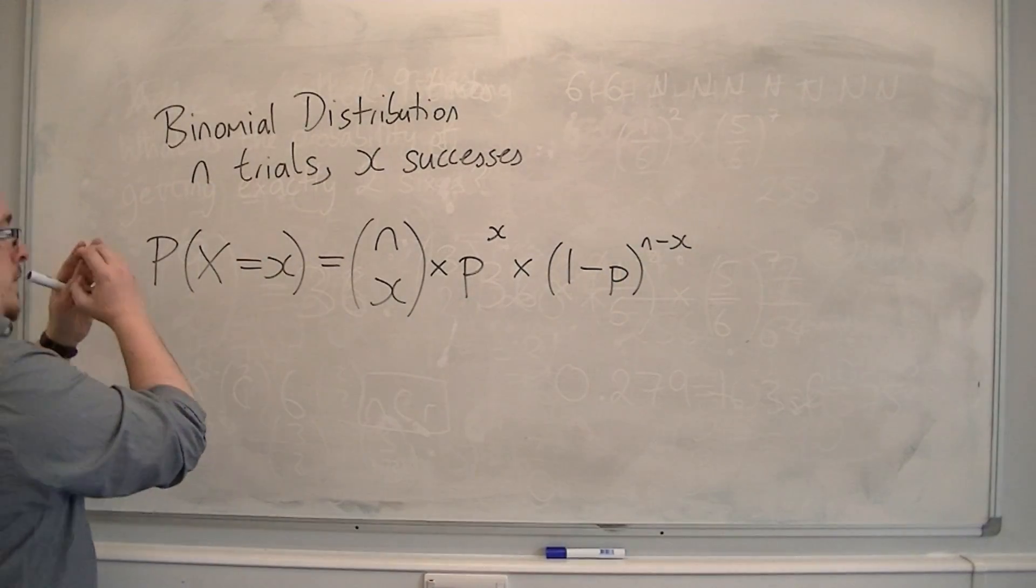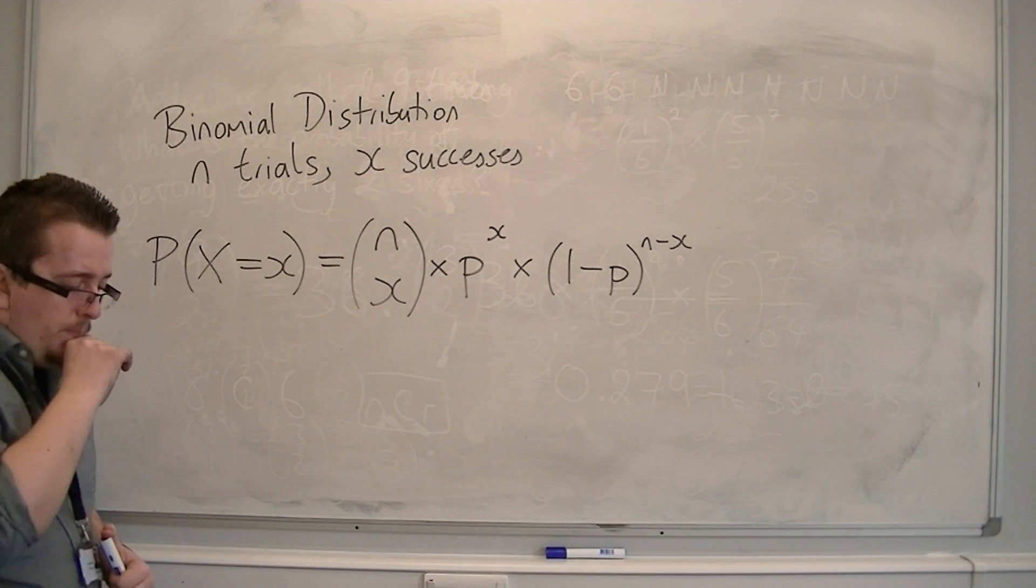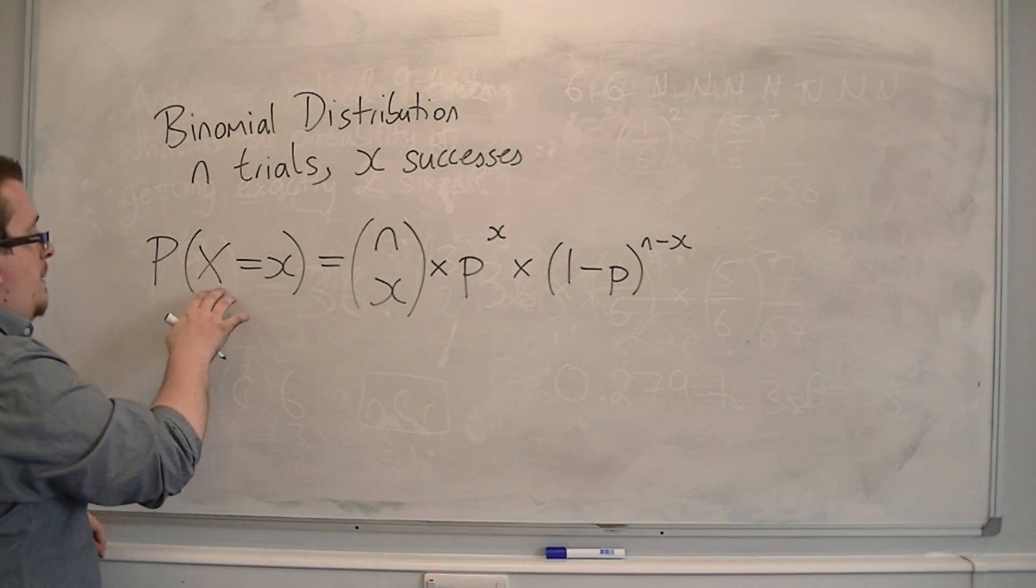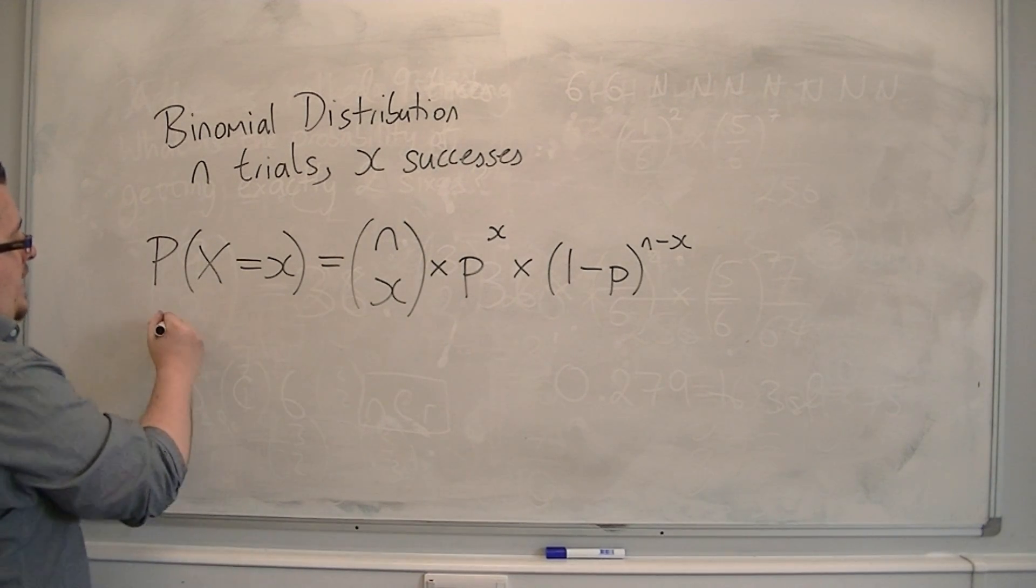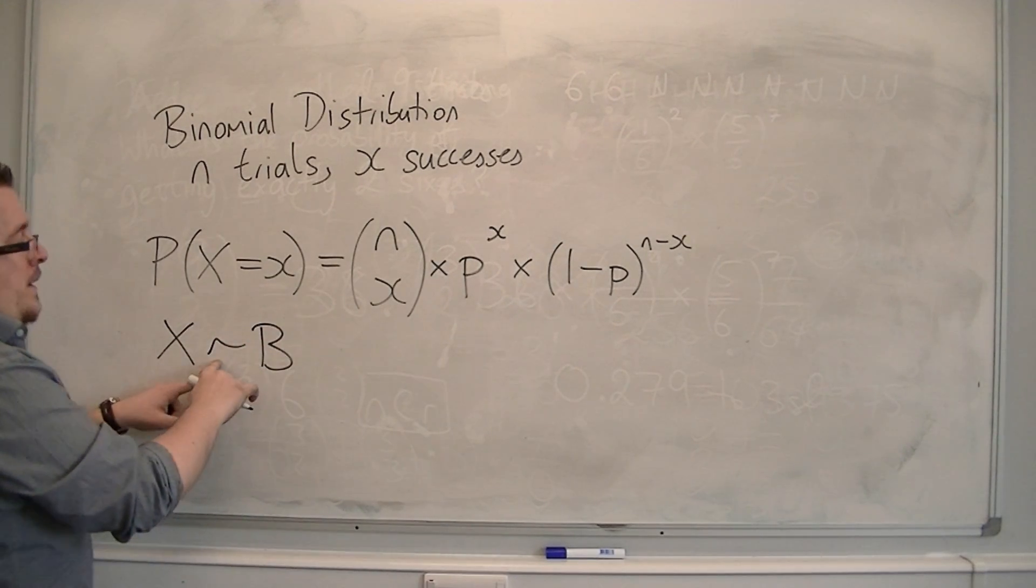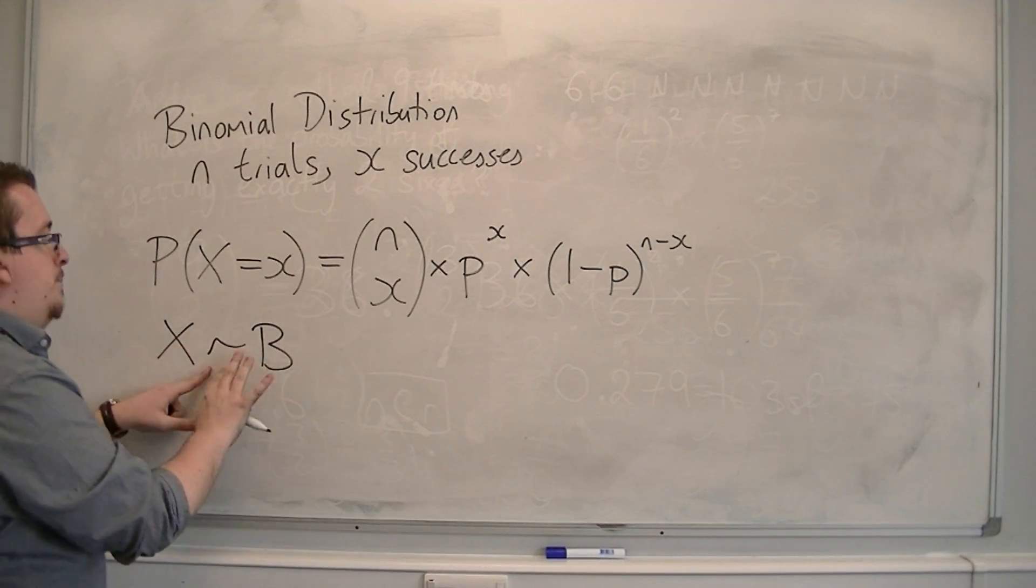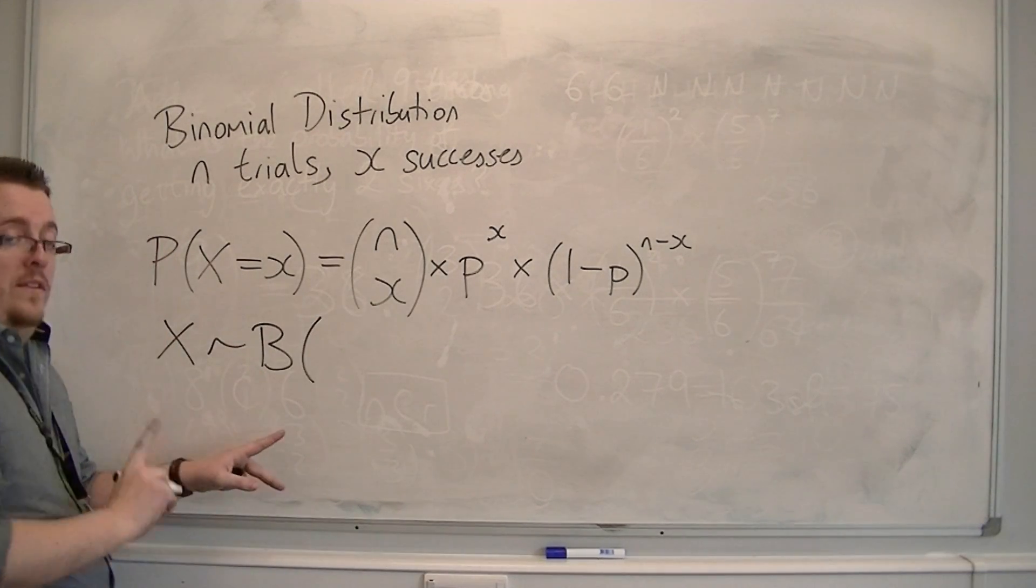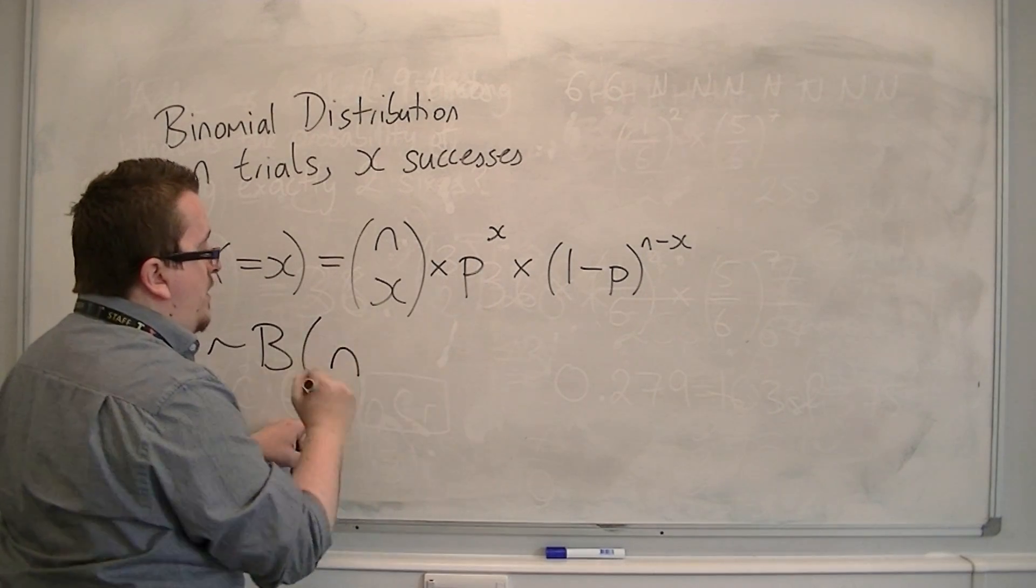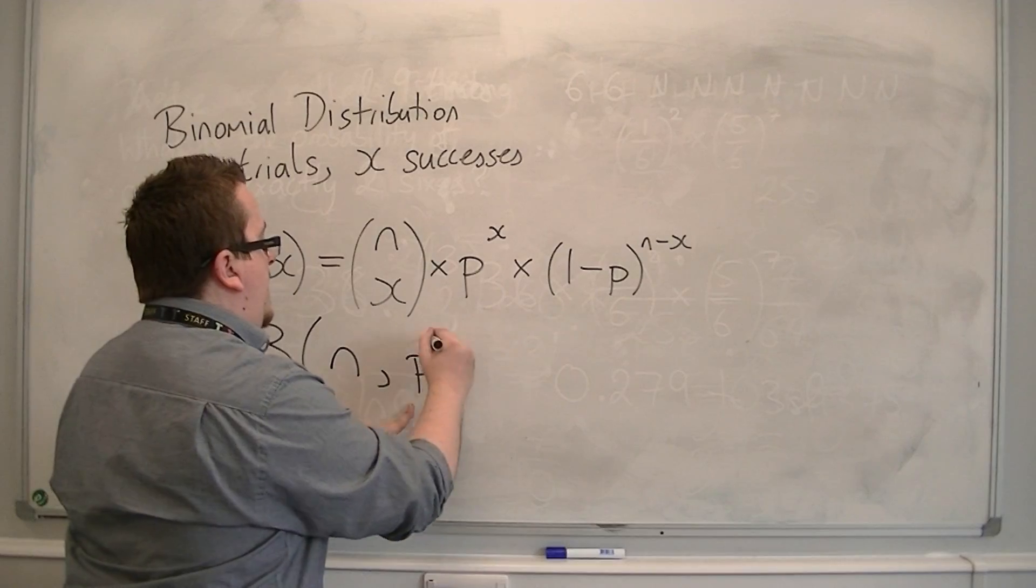So this is the probability of something appearing, of X being equal to x for a particular value. And we say that this capital X, we're looking at this x to be binomially distributed. So this little twiddle means X is binomially distributed with a number of trials n comma probability p.